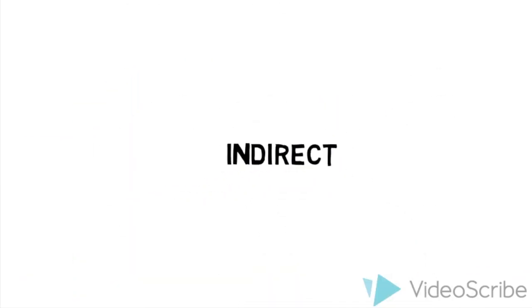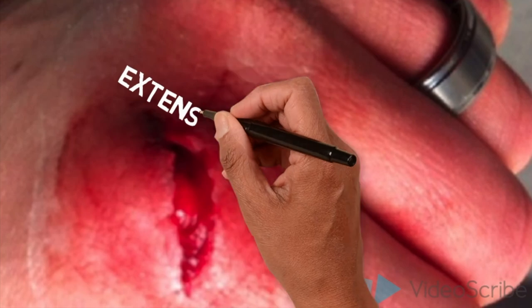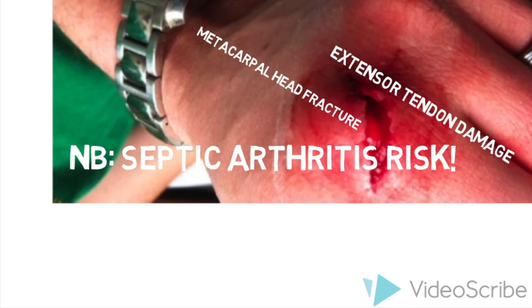Human bites can be direct when one is purposefully bitten, or indirect, also known as a fight bite, when a clenched fist comes into contact with human teeth. A fight bite can damage the extensor tendon or cause a fracture of the metacarpal head, which can rapidly progress to septic arthritis.